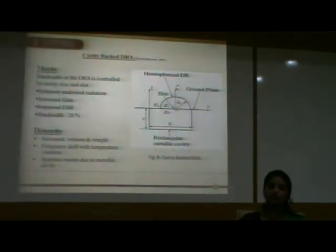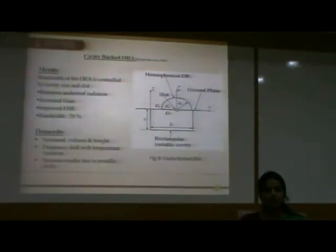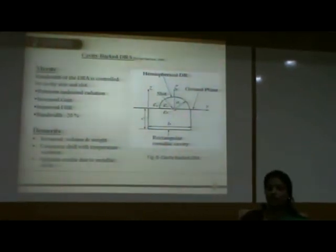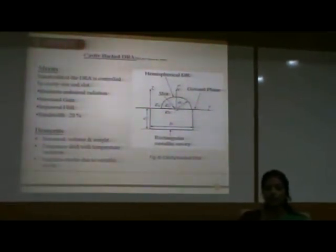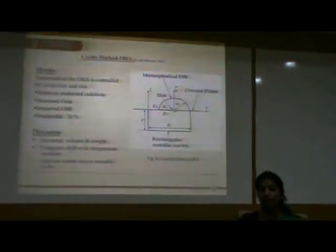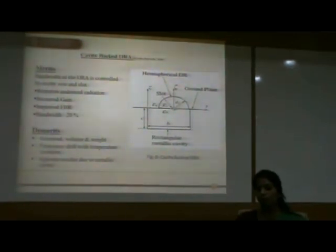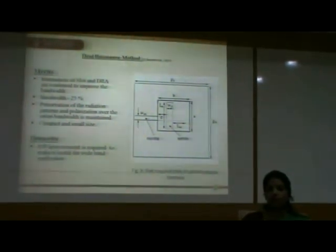The next method is cavity-backed DRA, also proposed in 2000. A metal cavity is placed on the back of the DRA, which removes undesired radiation. It also improves the front-to-back ratio and gain. The bandwidth achieved is 20%. The demerit of this design is that it increases the volume and weight. Frequency-temperature variation is also observed due to the metal cavity, and spurious modes due to the metal cavity are also a main drawback.